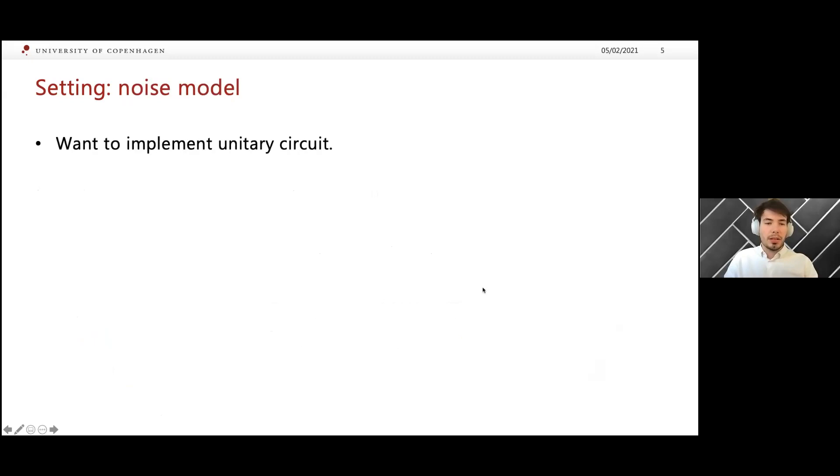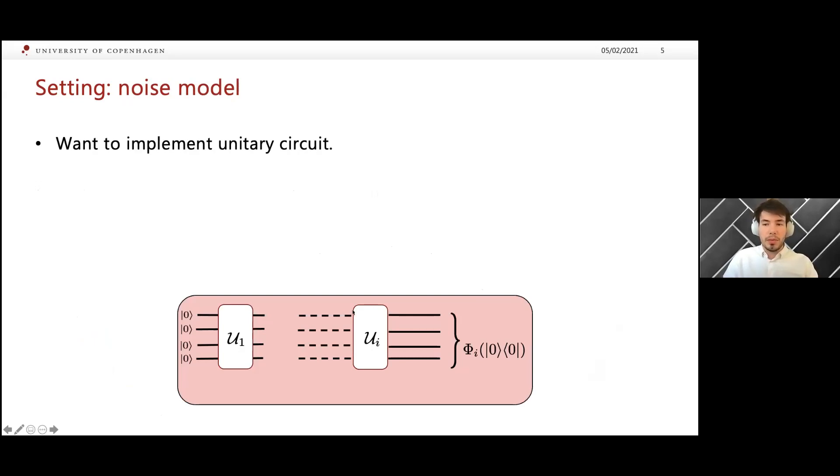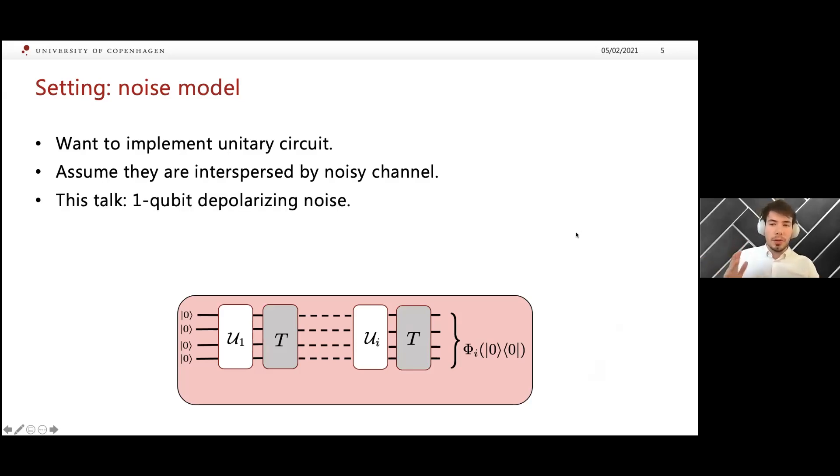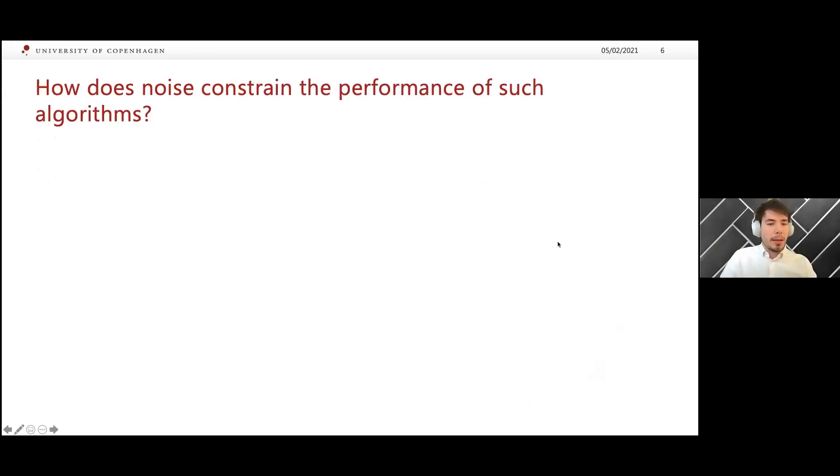Let me be a bit more precise on our noise model. We will assume we're going to implement a unitary circuit, like the one over here, which is something like what you want to do in QAOA. You just want to implement some unitary circuit of depth D here. But due to imperfections in the device, we will assume it will be interspersed by some noise channel T. In this talk, I will only focus on the case where T is a layer of one qubit depolarizing noise with probability P. But in the paper, we consider much more general scenarios. We consider also non-unital channels, but that requires a bit more work and care, and also continuous time scenarios so that we can also study different computational models like quantum annealing.